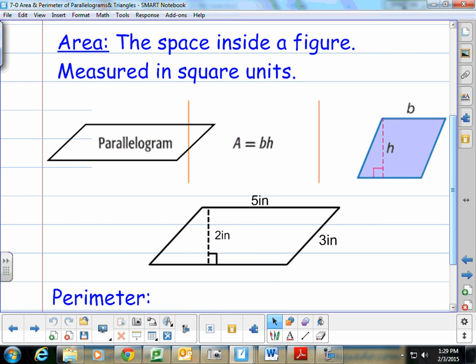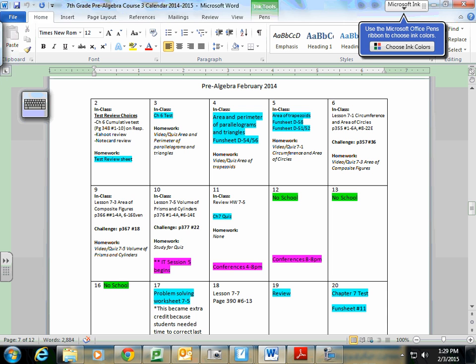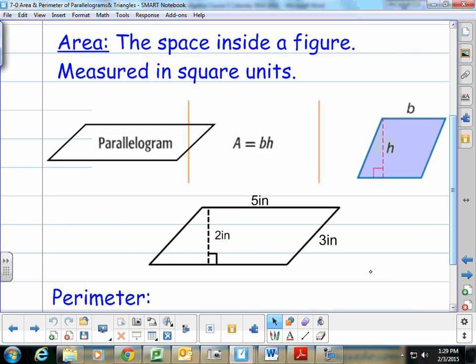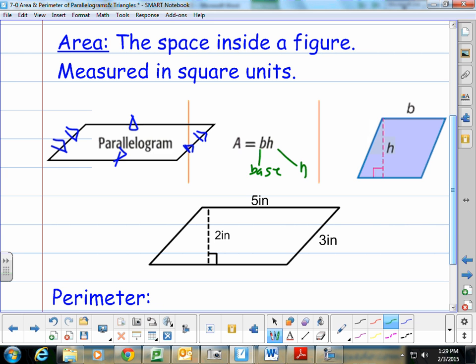This shape is a parallelogram. It's called a parallelogram because it has two sets of parallel sides. These sides are parallel to one another, and these sides are parallel to one another. A parallelogram's area is found by doing base times height. The base is the one that lays flat, and the height is from the top vertex to the bottom base.